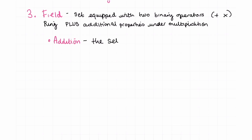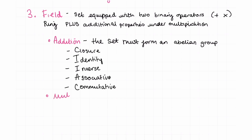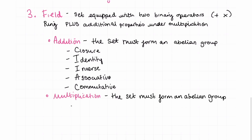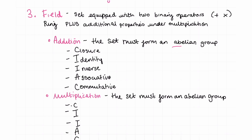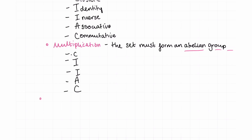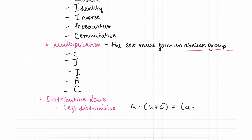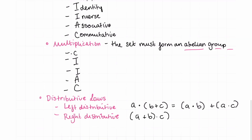Under addition, the set must form an abelian group: closure, an identity element, every element has an inverse, associativity, and commutativity. Under multiplication, it must also form an abelian group: closure, an identity element, every element has an inverse, associativity, and commutativity. Additionally, as with rings, it must conform to the distributive laws — left distributive: a·(b+c) = a·b + a·c, and right distributive: (a+b)·c = a·c + b·c.